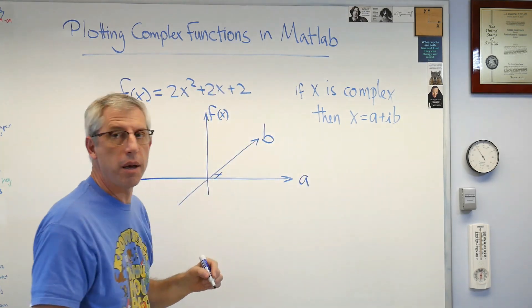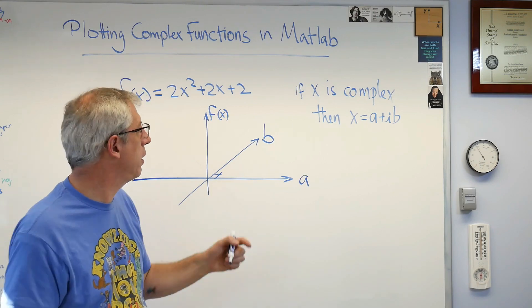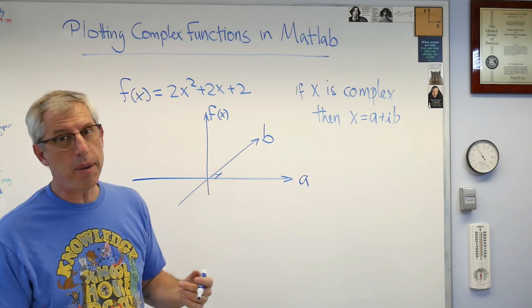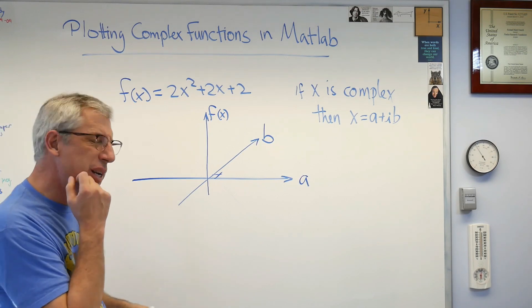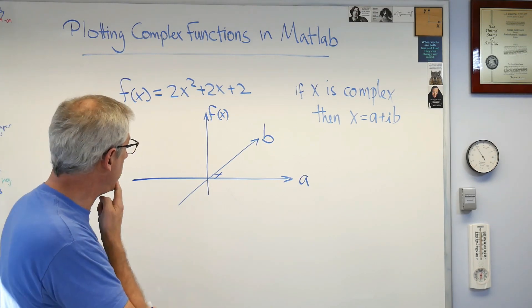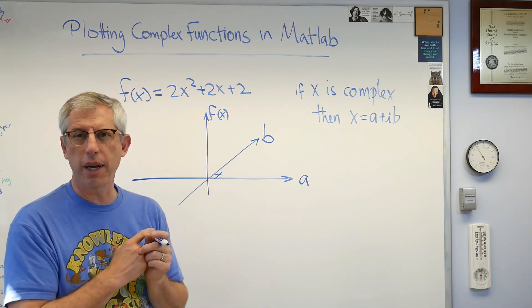This is going to be f of x, which is really f of a plus ib. Here's the problem: there's two components going in as independent variables, the real and the imaginary. That means there's going to be two components coming out, real and imaginary.